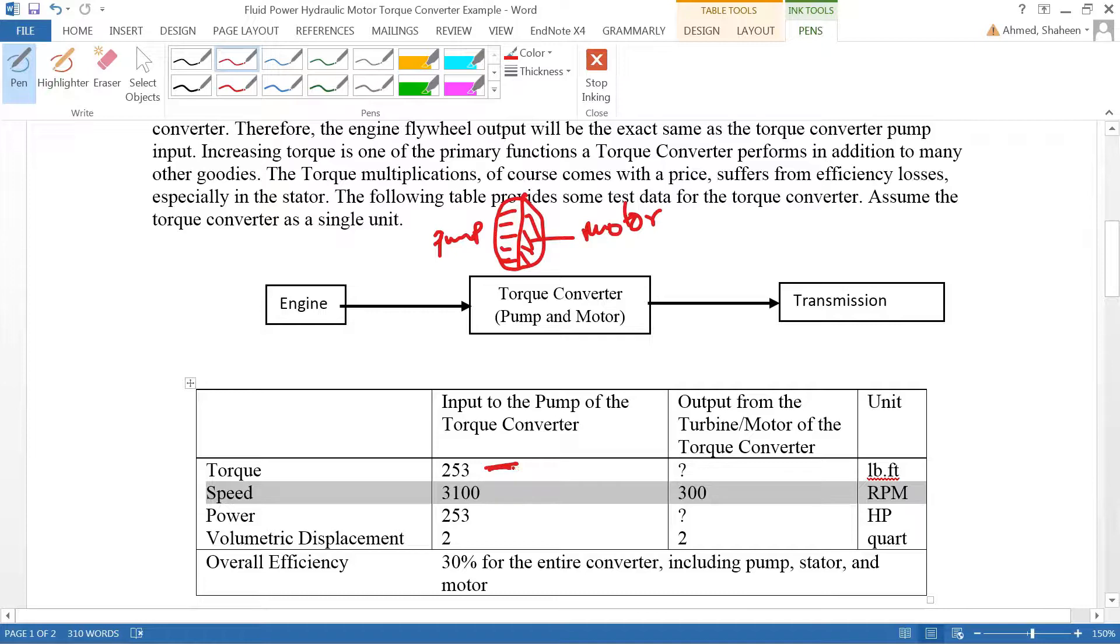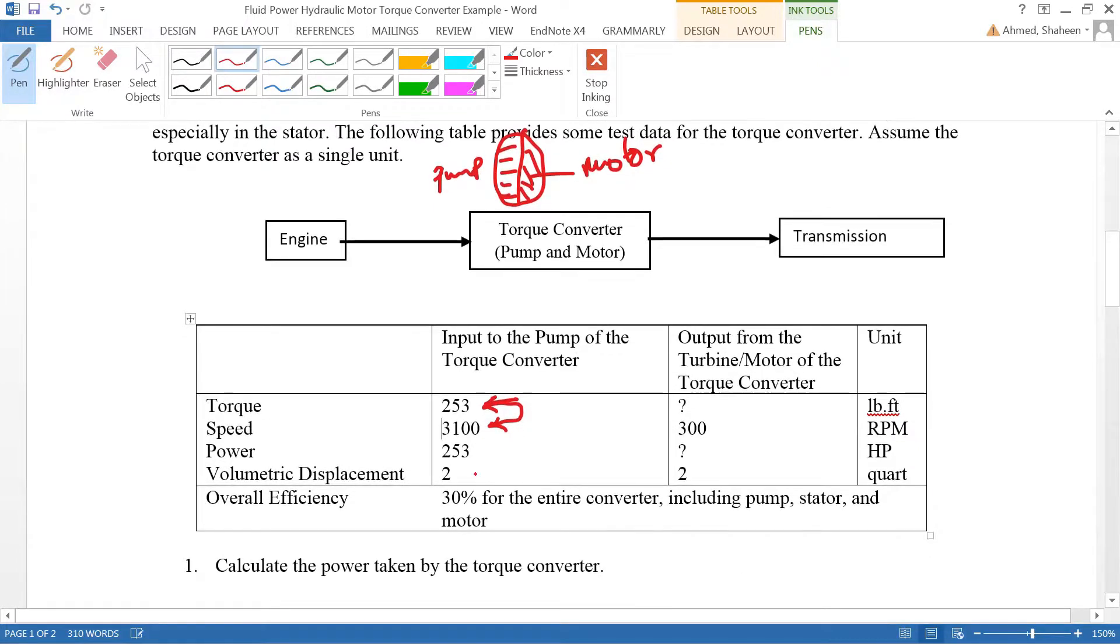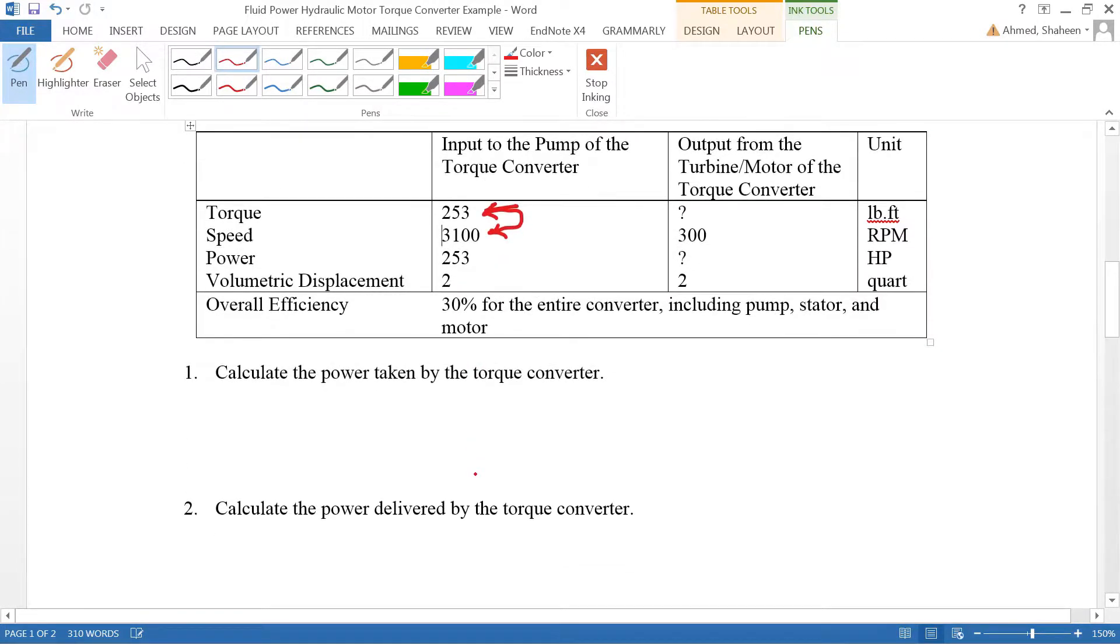Instead of using directly, first of all they shouldn't be same. They should be same at the speed of 5252. Now calculate the power taken by this torque converter.